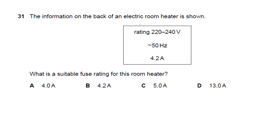Question 31: an electric room heater has an operating current of 4.2 A. A fuse rating less than 4.2 A would blow every time. To protect against overcurrent while allowing normal operation, a fuse of 5 A (the next rating above 4.2 A) is suitable.